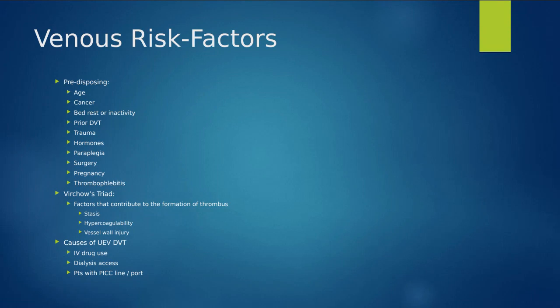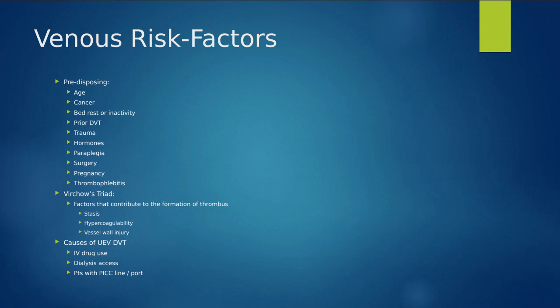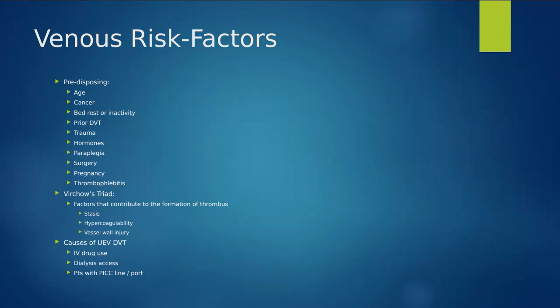When a patient has a clot and inflammation of the superficial vein — thrombophlebitis — they are at greater risk of getting an actual DVT. Virchow's triad is the combination of requirements necessary to form a blood clot: stasis of blood flow — blood slowing down — hypercoagulability for whatever reason such as medication or recent surgery, and vessel wall injury — trauma, prior DVT, thrombophlebitis — all resulting in weakening of that vein wall. Those three factors are the main contribution to thrombus formation.